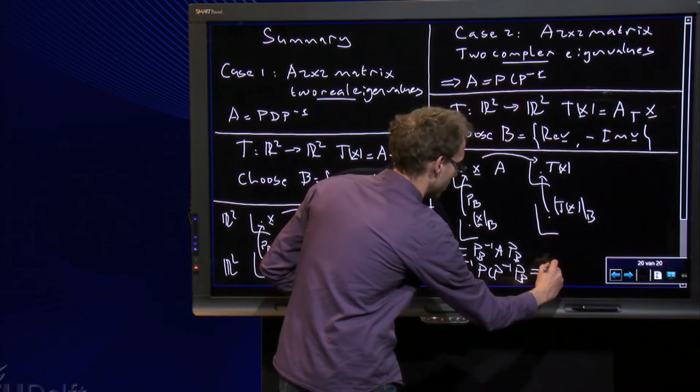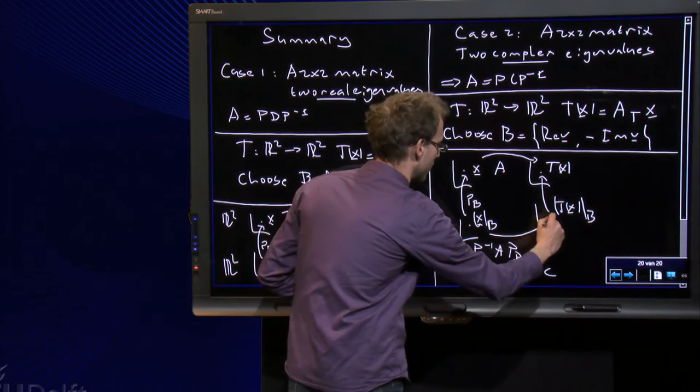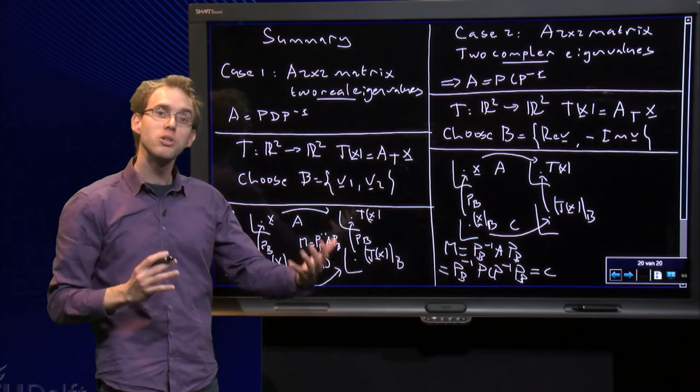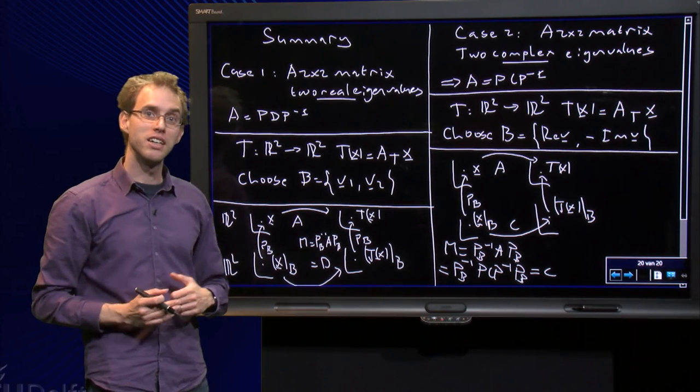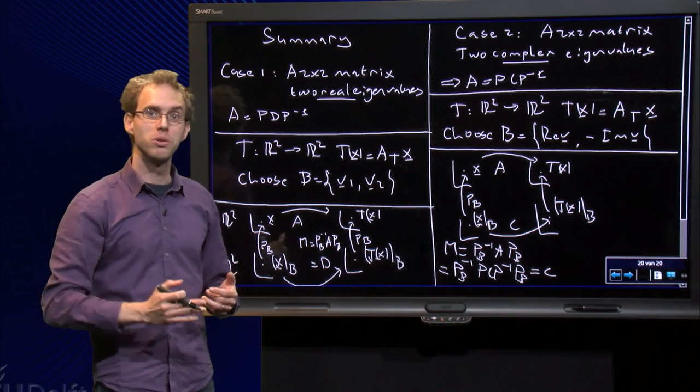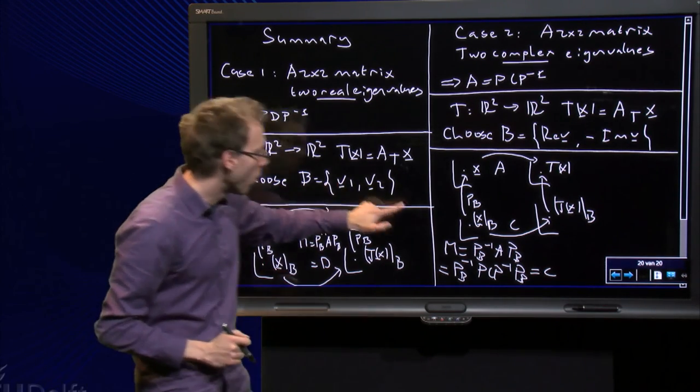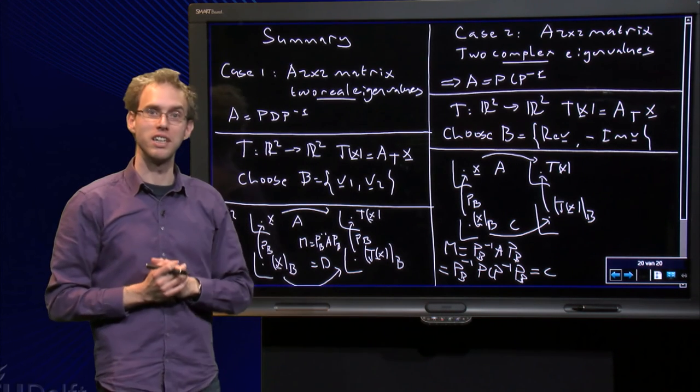So I am left with a matrix C, which means that in that case we have a matrix C over there. So by choosing an appropriate basis, a linear transformation from R2 to R2 is either given by a diagonal matrix or given by a scaling rotation matrix.